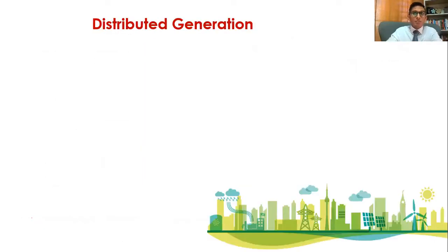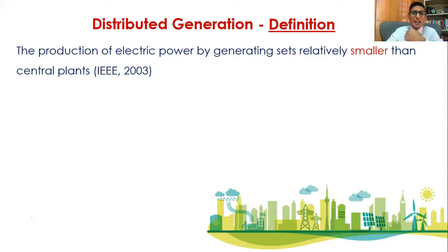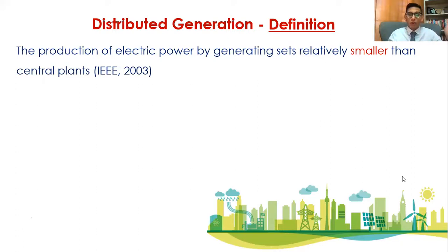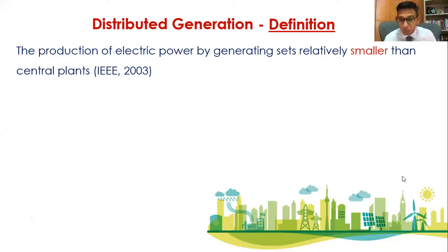Now that we understand the drivers and how they've been enabled by technology and lower costs, let's understand the concept of distributed generation. It's an amalgam of definitions. It is the production of electric power by generating sets that are relatively smaller than central plants. Central plants can be 50, 100, 200, or 500 megawatts - huge centralized power plants. Distributed generation units are smaller ones, relatively speaking. What is a small one for Pakistan could be very big for Mauritius, depending on the size of the country.